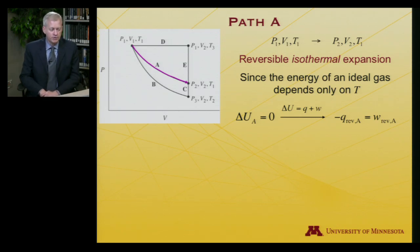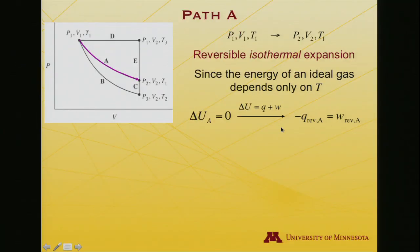I'll remind you that the energy of an ideal gas only depends on temperature. So if you remember, say, our monatomic ideal gas, the internal energy is 3/2 RT. So if the initial temperature and the final temperature are the same, delta U is zero. And as a result, it must be the case, since delta U equals Q plus W, that negative Q equals W. I'll emphasize that we're on path A by using this A subscript: -Q_rev,A = W_rev,A.